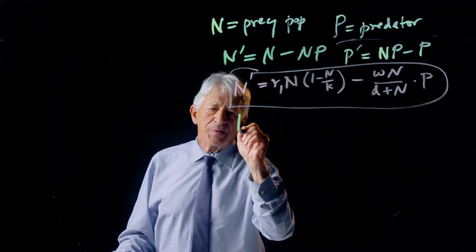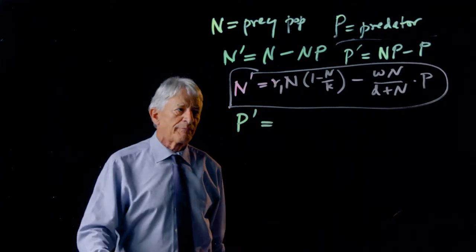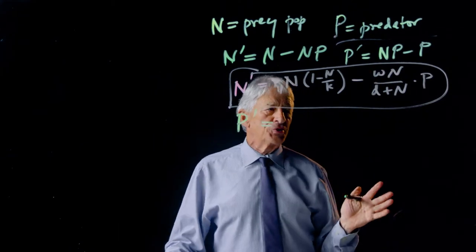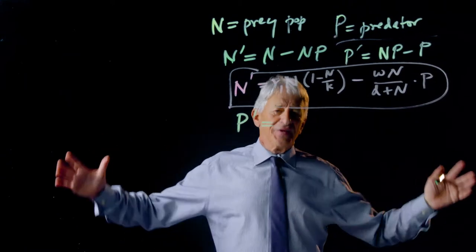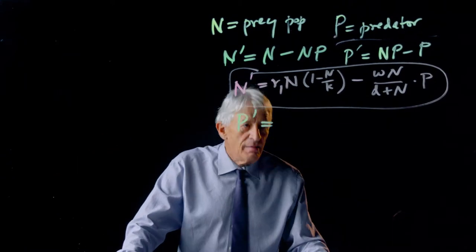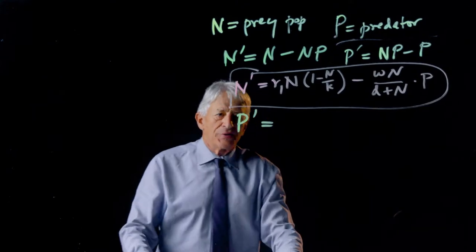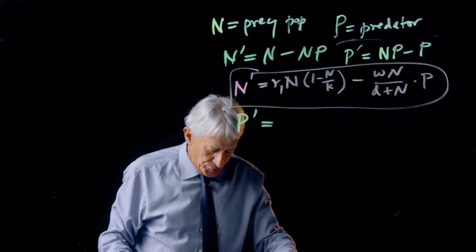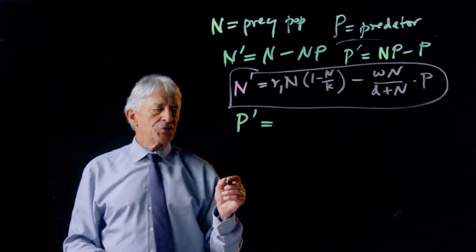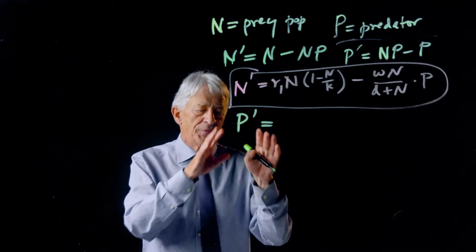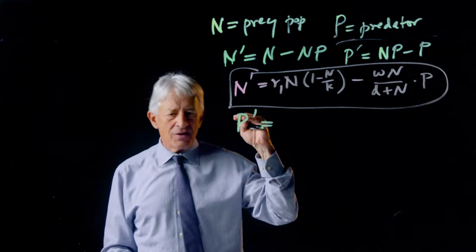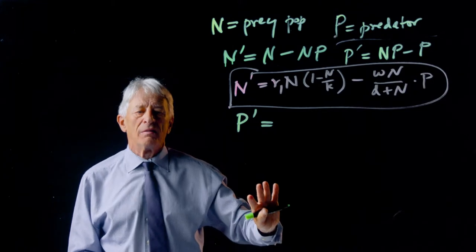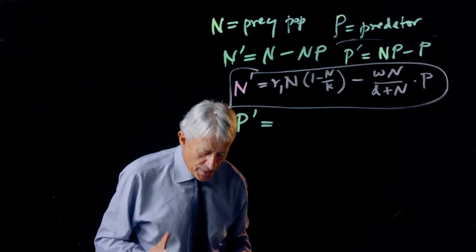Now let's look at the predator differential equation. And there again, that was making the assumption that the predator can eat infinitely much prey. And that isn't true. And so we're going to take a different approach to modeling the predator dynamics. We're going to assume that the predator also has a carrying capacity, but that the carrying capacity is set by the number of prey.